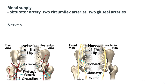The blood supply to the hip joint is mainly from the obturator artery, the two circumflex arteries, and the two gluteal arteries. The medial and lateral circumflex femoral arteries form an arterial circle around the capsule attachment of this joint. From this circle arise the retinacular arteries, which supply the intracapsular part of the neck and the greater part of the head of the femur.